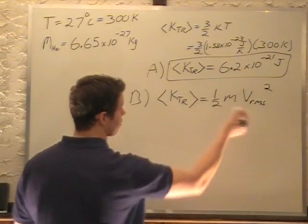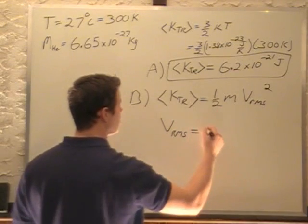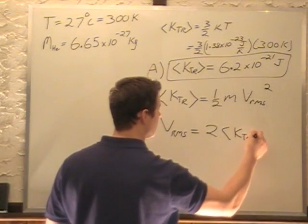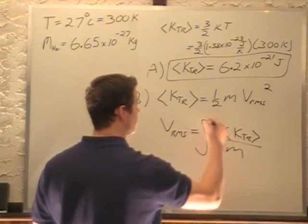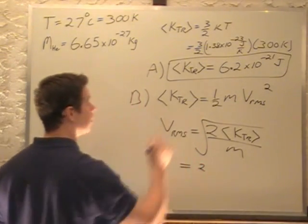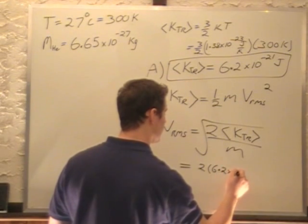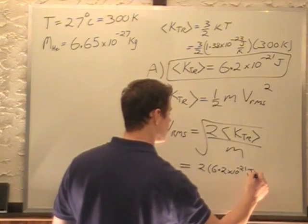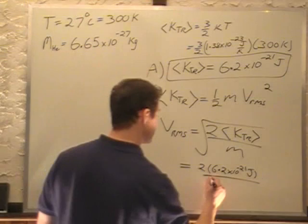So we're going to solve for v_rms equals, multiply 2 over here, square root of 2 times KE divided by m, take the square root, plug in our values, 2 times 6.2 times 10 to the minus 21 joules, divided by our mass, which is 6.65 times 10 to the minus 27.